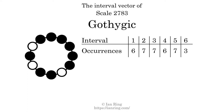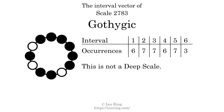There are 3 intervals with the size of 6 semitones, at positions here, here, and here. Each interval does not appear in this scale a unique number of times, so this is not a deep scale.